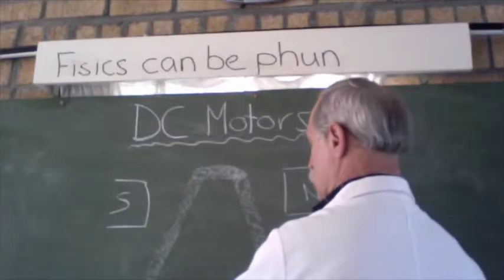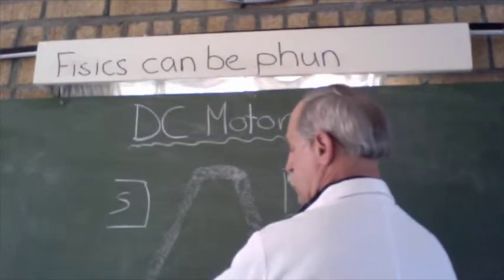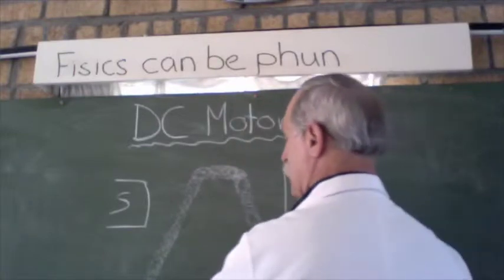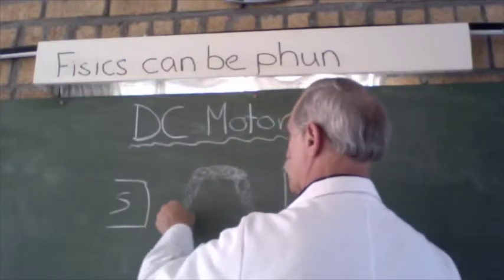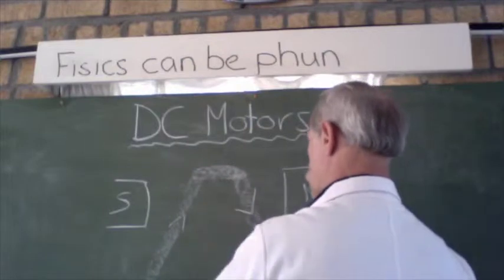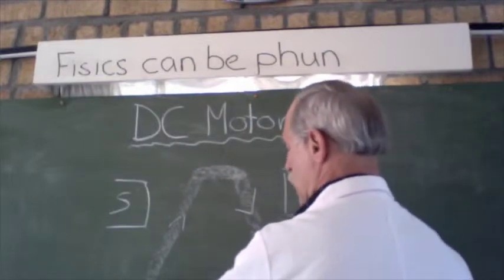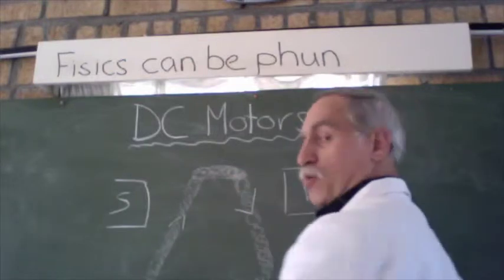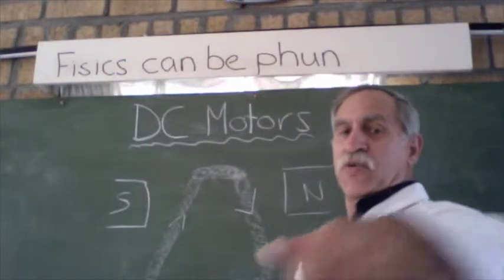And as this turns, it touches the brushes. Let's say this brush delivers positive. This brush delivers negative. So current flows from positive to negative. And so our brushes touch our split ring, which then goes through our commutator or our coil.